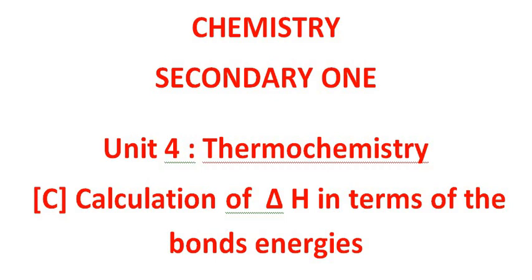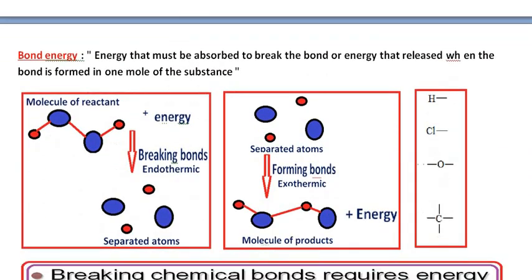Now we are going to study a new method for calculation of delta H. In this time, we determine delta H in terms of the bond energies. The bond energy is known to be the energy required to break the bond or the energy released when a bond is formed in one mole of the substance.